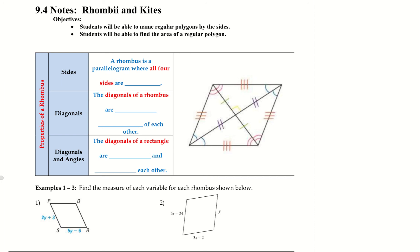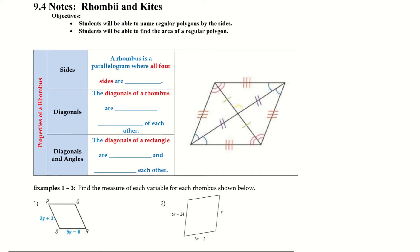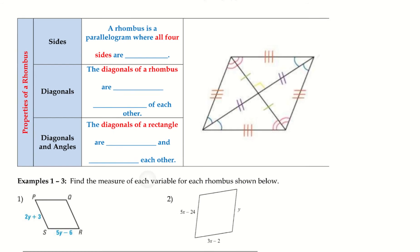We're going to be doing the 9.4 notes today on rhombi and kites. Students will be able to name regular polygons by the number of sides, and students will be able to find the area of a regular polygon.